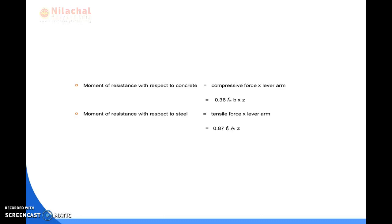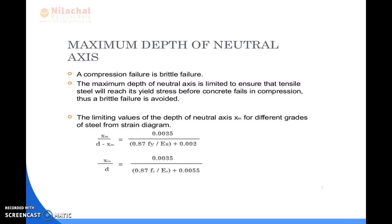The moment of resistance with respect to concrete is the compressive force into lever arm: MR = 0.36FCK × b × x × Z. The moment of resistance with respect to steel is the tensile force into lever arm: MR = 0.87Fy × Ast × Z, where 0.87Fy × Ast is the tensile force and Z is the lever arm.